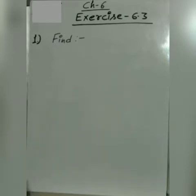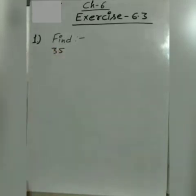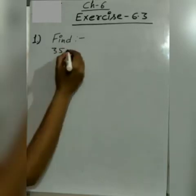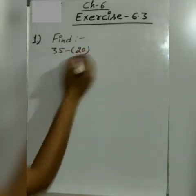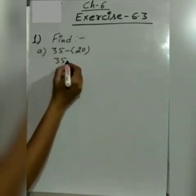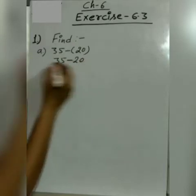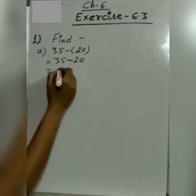35 minus 20. 35 bracket open karenge minus 20. Then 35 minus 20 is 15.